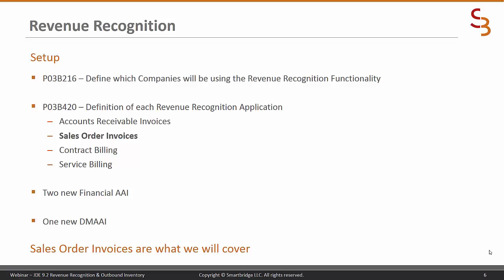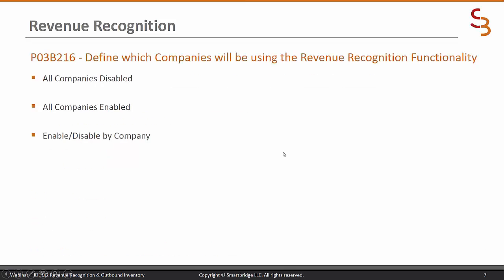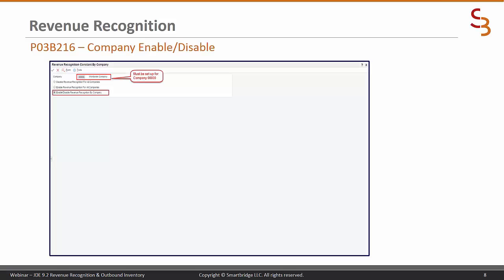Today we're going to be focusing on sales order invoices exclusively. There are two new financial AAIs that need to be set up and one new distribution/manufacturing AAI to comply with FASB and IASB regulations. P03B216 allows you to define which companies will be using revenue recognition. You can disable all companies, enable all companies, or enable/disable by company.